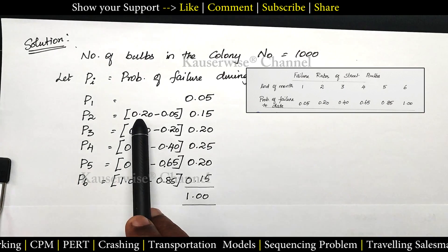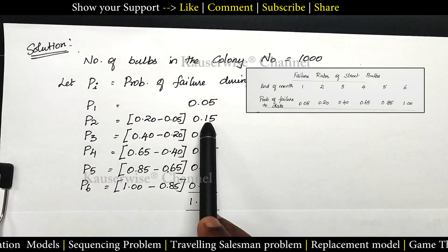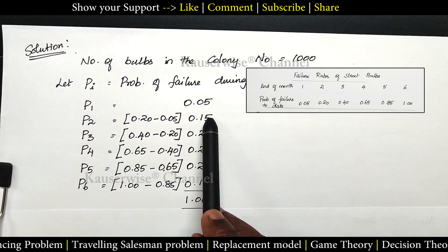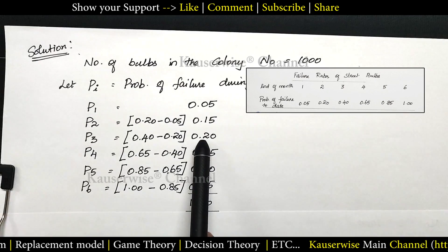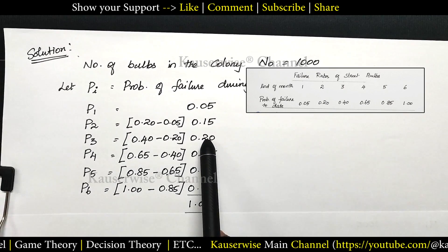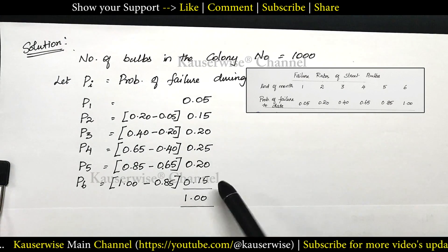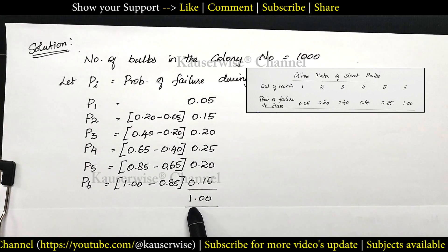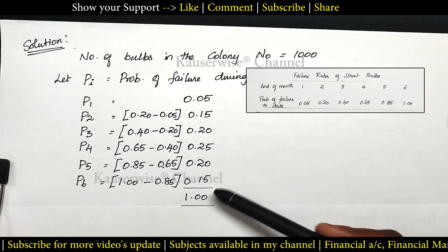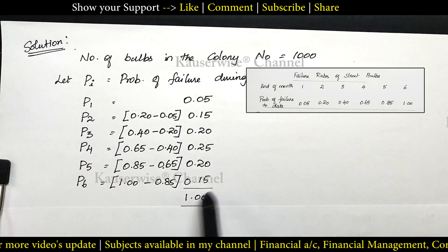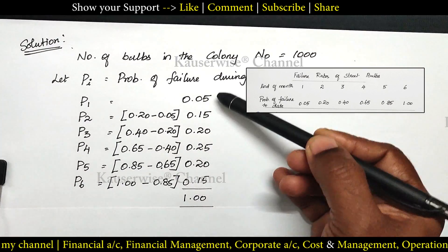For the second month they have given cumulative 0.20 — just compare with the previous month to find out the difference, giving the second month probability. In the same way, third month cumulative minus the previous month gives 0.20 as third month probability. You can find out the probability for all 6 months this way — the total should be 1. In some problems they will provide individual probability for each month directly; in that case you need not do this calculation. Here they have given cumulative, so we calculate probability for each individual month.